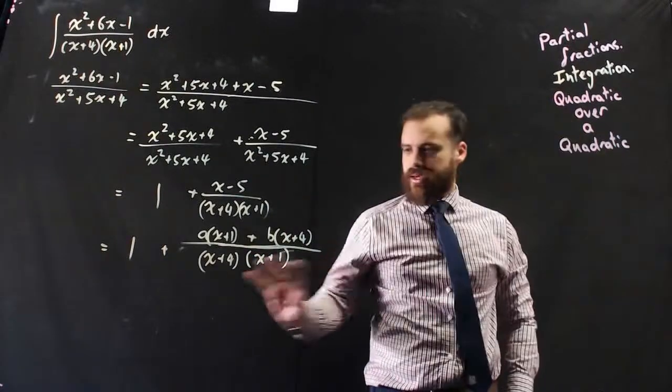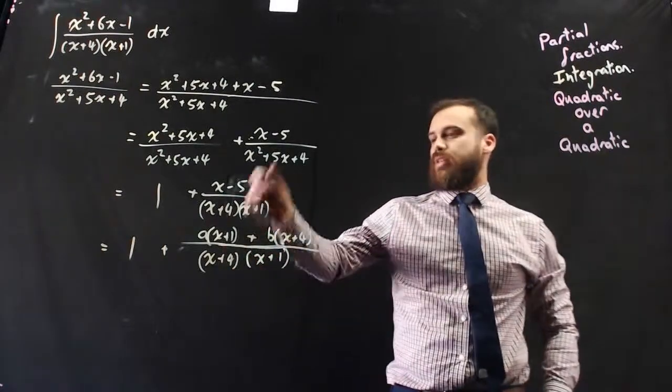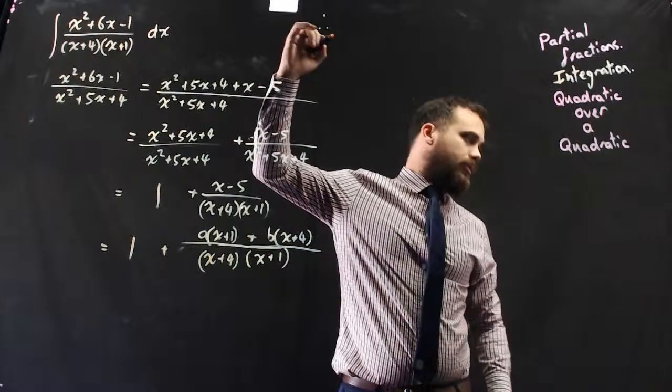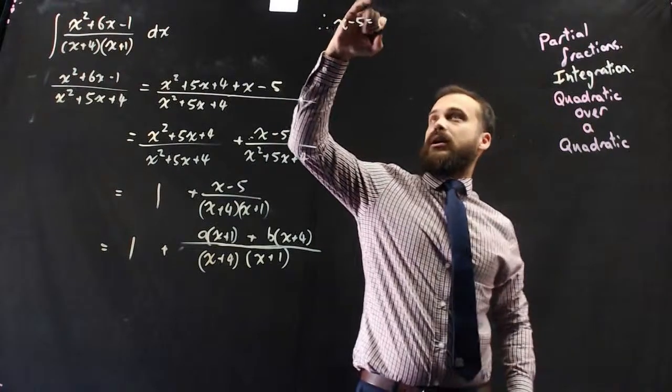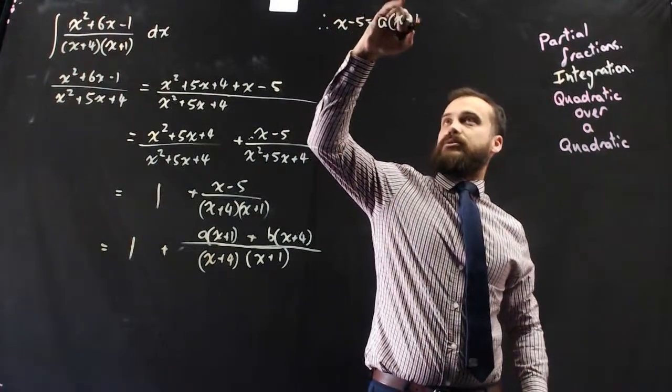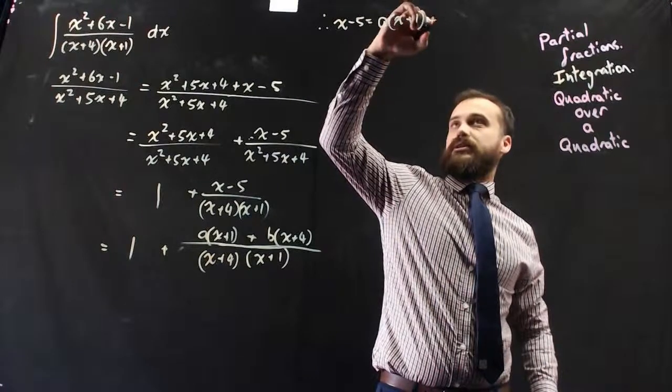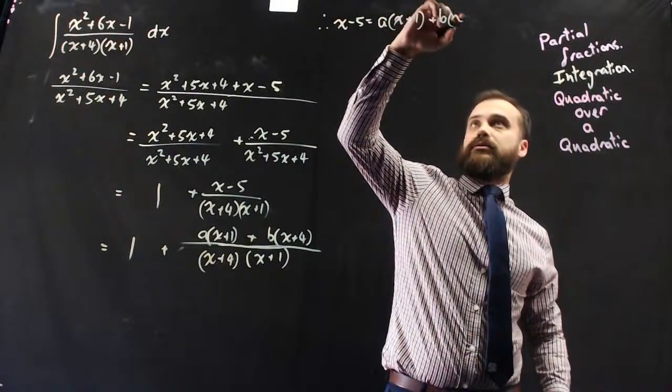And I'll just tidy that up. So now that it's all tidy, therefore x minus 5 equals a(x plus 1) plus b(x plus 4).